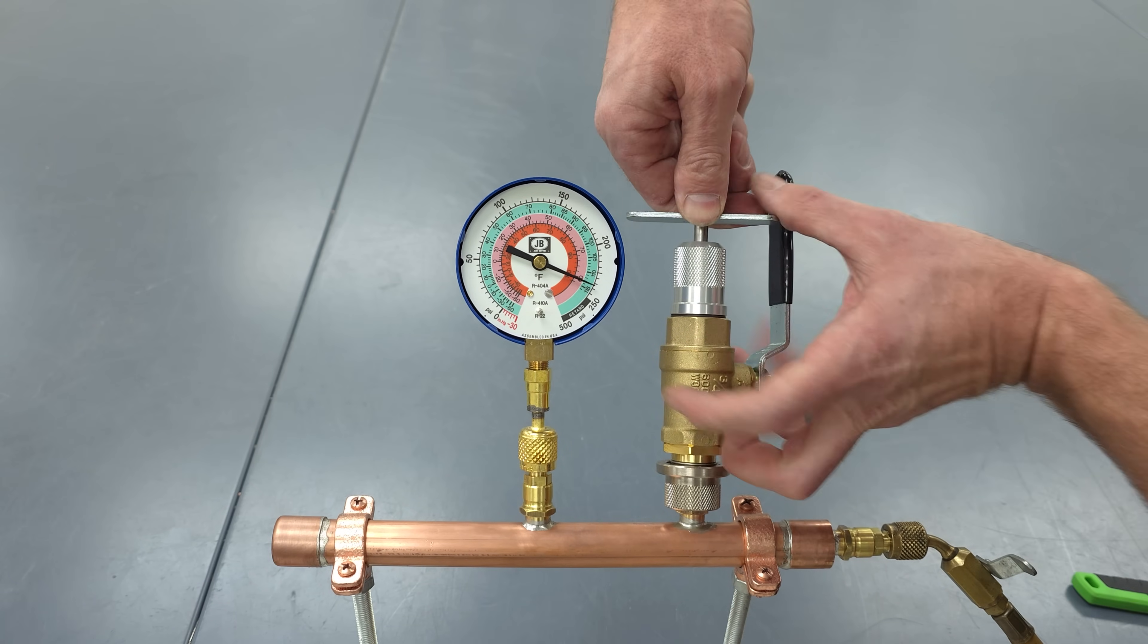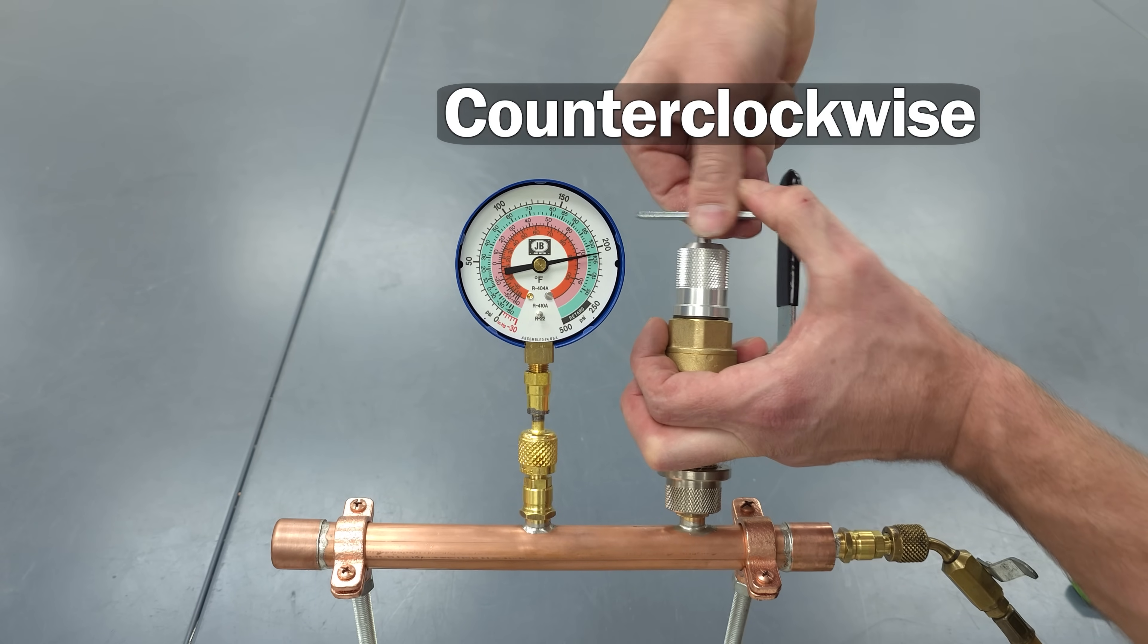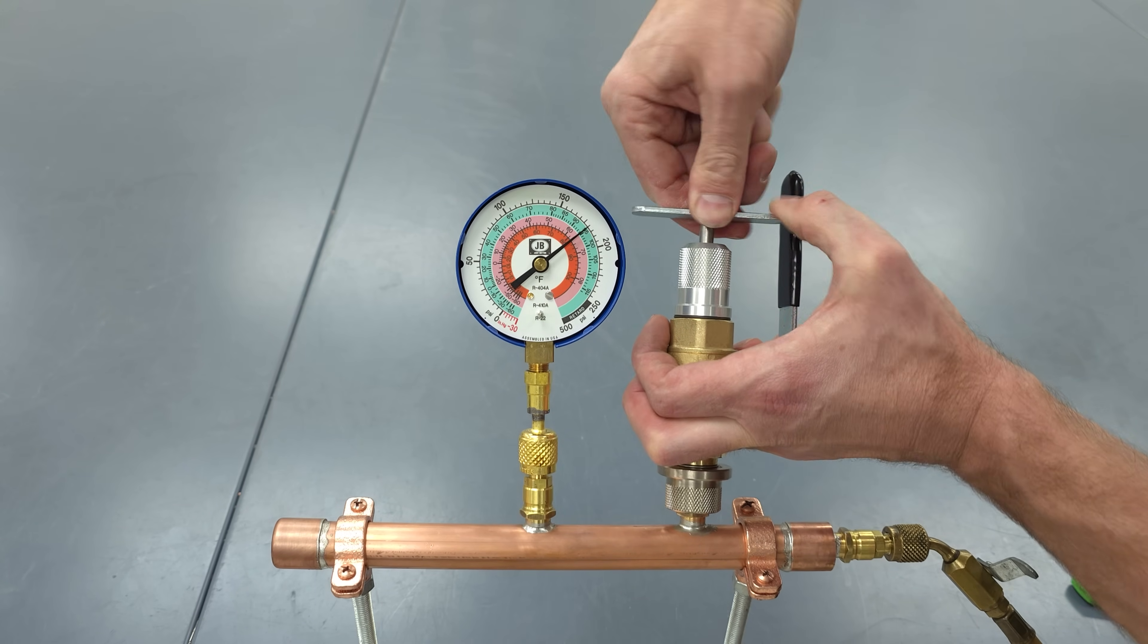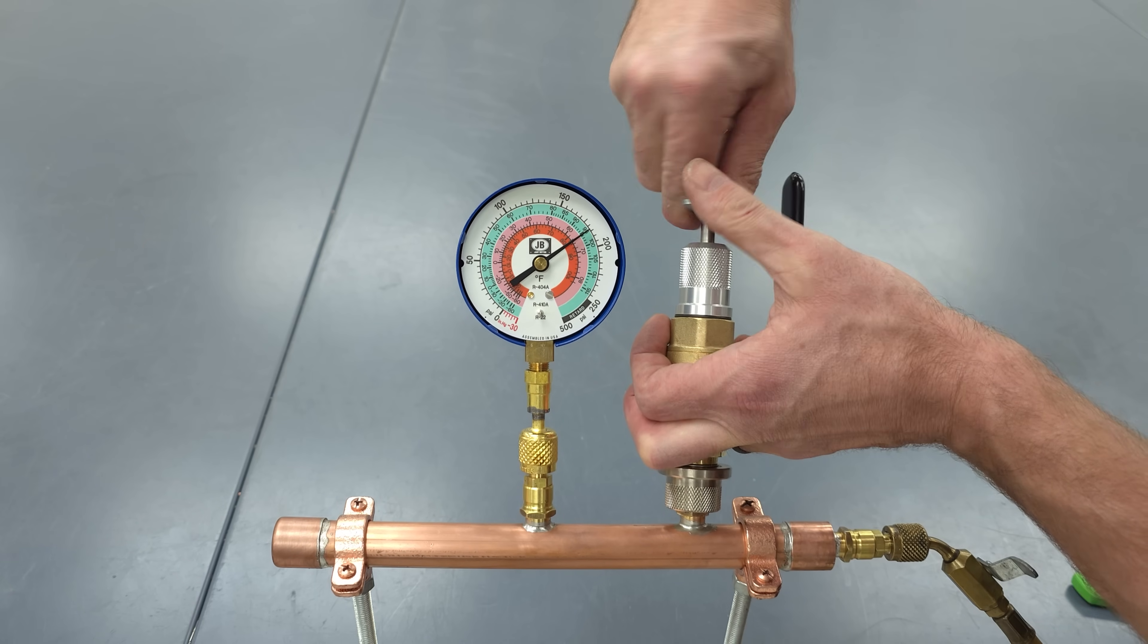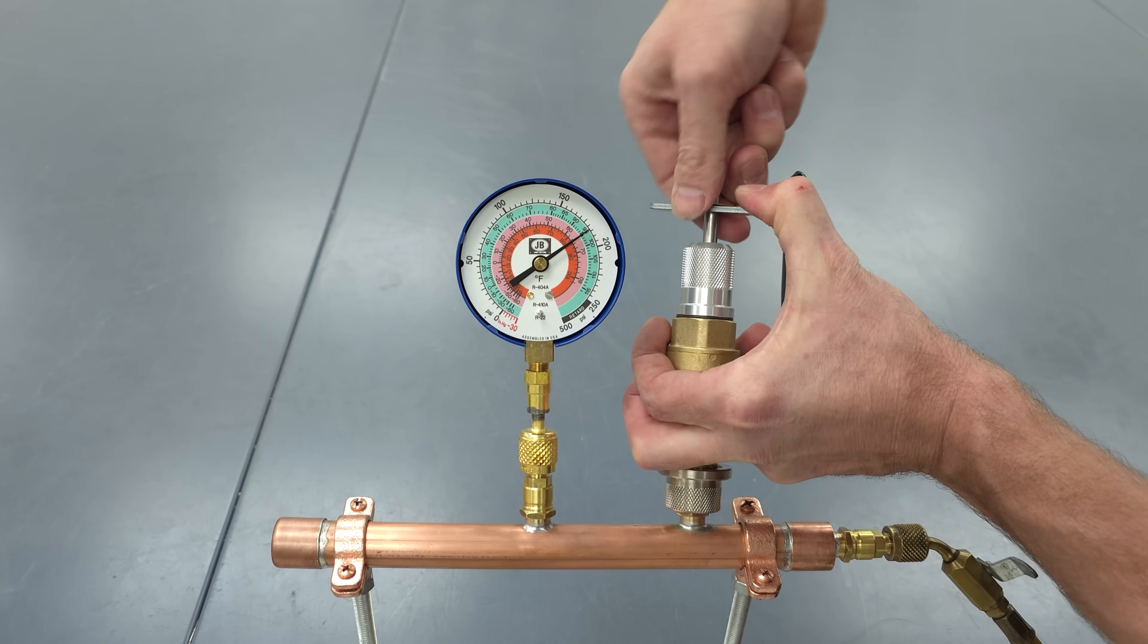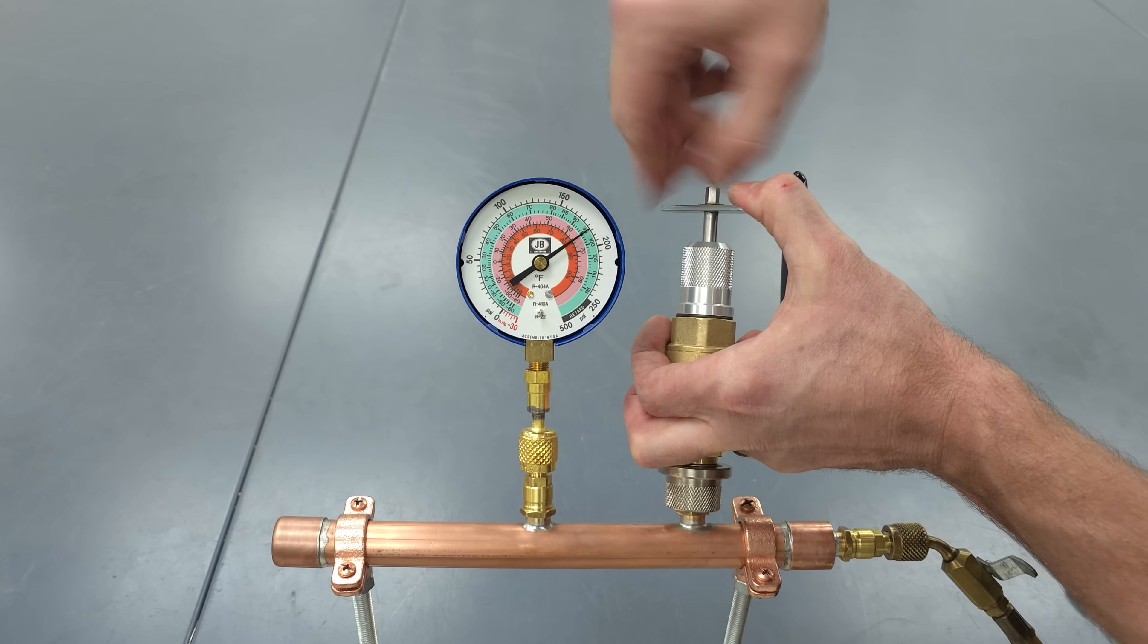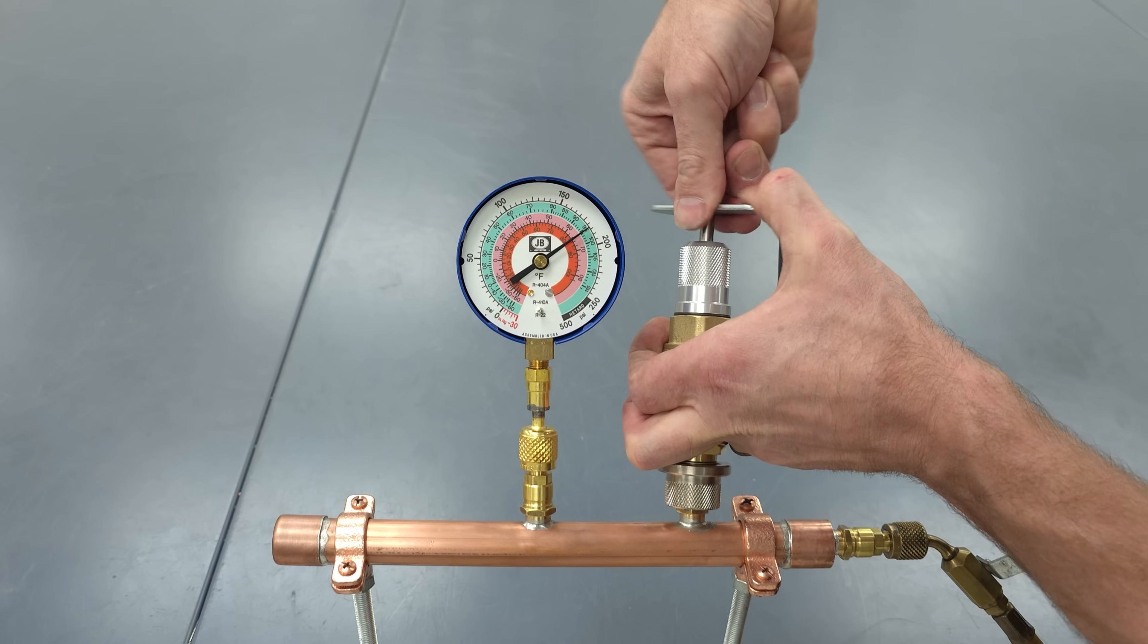And so now what we're going to do is we're going to turn this counterclockwise. You want to also make sure that you're holding this handle down as you are turning this counterclockwise because you're going to have the refrigerant pressure in this case it's nitrogen pressure pushing up against the Cormax valve. And so I'm just going to keep turning this until I can kind of feel that the Cormax is out of the threading section.